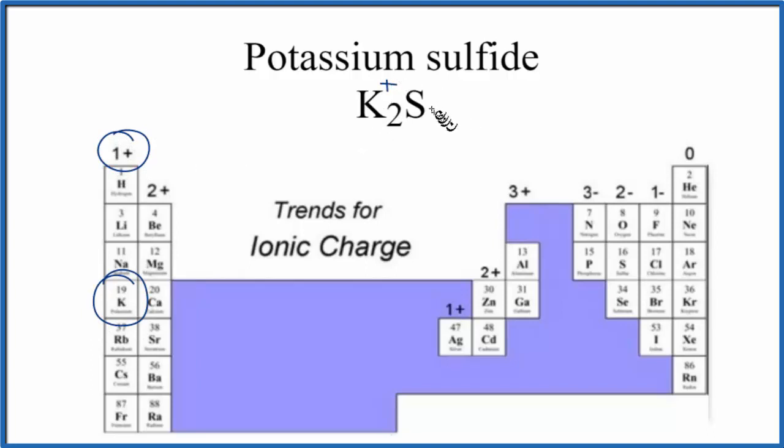I'm going to write a plus here, and then sulfur over here forms 2 minus ions. So we need two of these 1 plus potassium ions to balance out the sulfur.